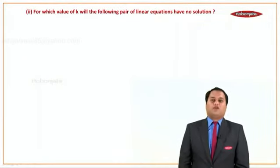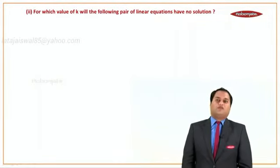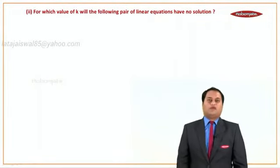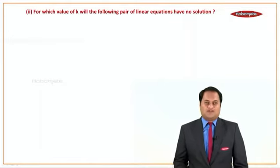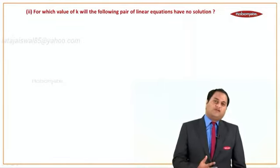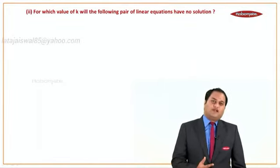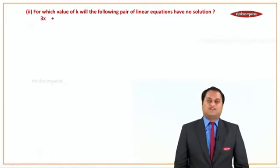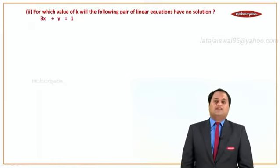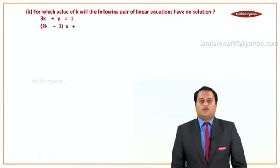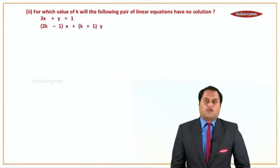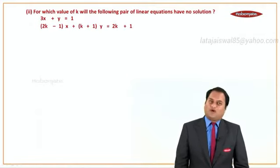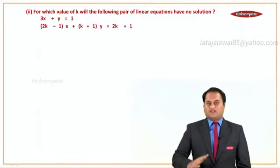For which value of k will the following pair of linear equations have no solution? In the previous sum it was infinite solution — here the condition is no solution, that's the only difference. The equations are: 3x plus y is equal to 1, and 2k minus 1 times x plus k plus 1 times y is equal to 2k plus 1.